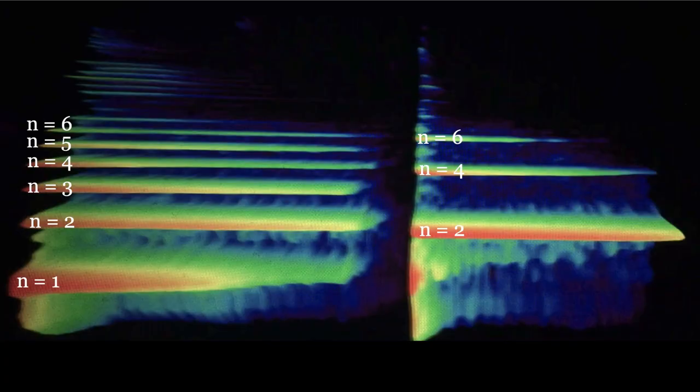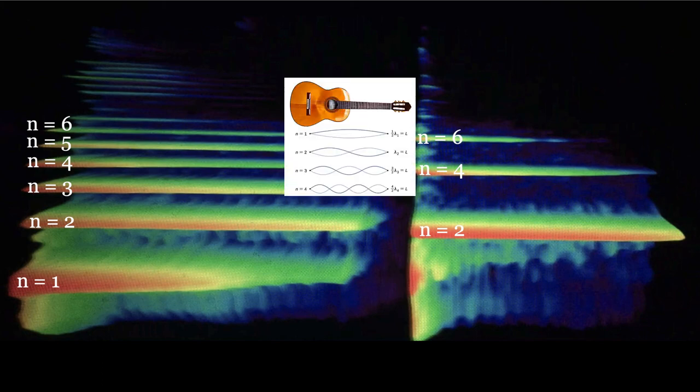Let's try that again — this time after I play the open string, I'm going to place my finger halfway down the string, causing a node at that point, which will silence the first harmonic. As you can see from the spectrogram, when I created a node in the middle of the string, that silenced the n equals one, n equals three, and n equals five harmonics. This actually makes a lot of sense: looking at the diagram, the n equals one and n equals three modes require there to be an antinode in the middle of the string, so if I prevent that antinode from happening, those modes become silenced.